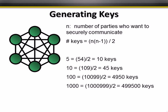A problem with shared key systems is that any two parties need a shared key between them. As the number of parties who want to securely communicate increases, the number of keys needed increases exponentially. For example, five people need 10 keys between them, but 1,000 people require 499,000 keys.